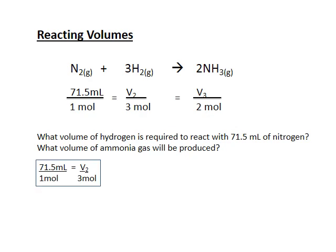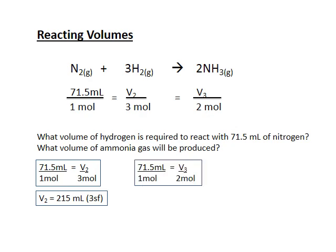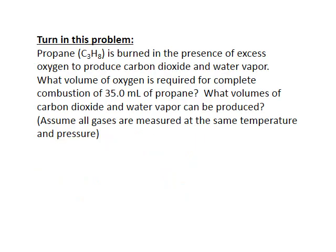Let's solve this out. 71.5 over 1 is equal to V2 over 3, so I calculate V2 to be 215 milliliters. Solving the same way for V3, so V3 over 2 moles has to be the same as 71.5 over 1, so V3 is equal to 143 milliliters. Pretty simple, pretty easy, right? Just when you thought stoichiometry was terrible, all of a sudden it got easy.